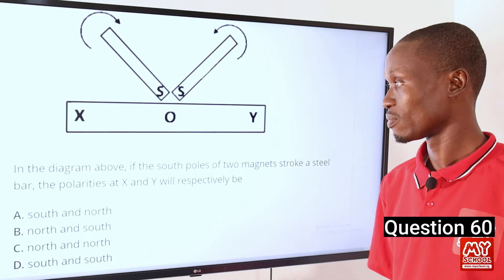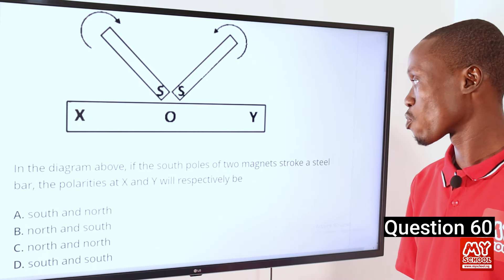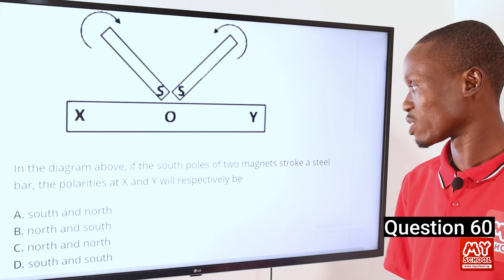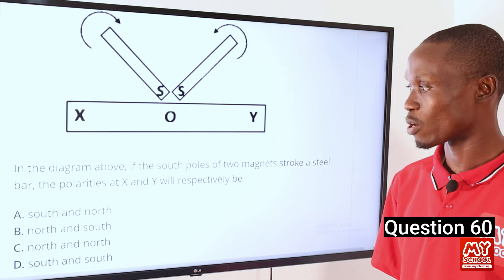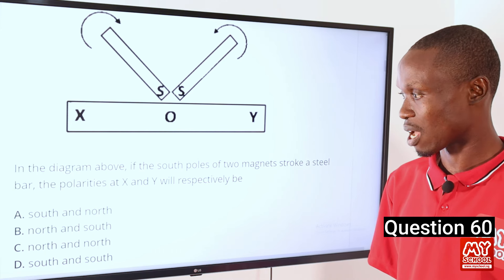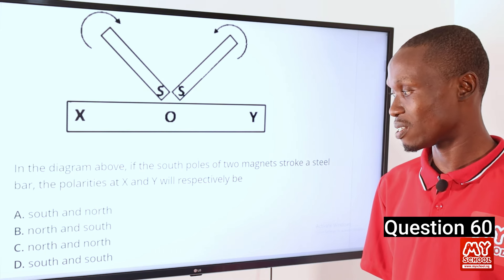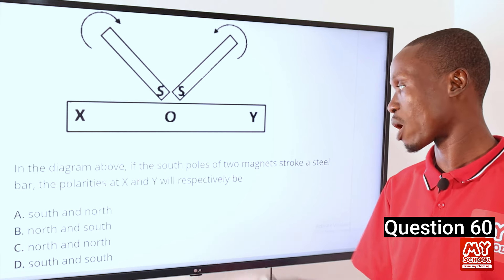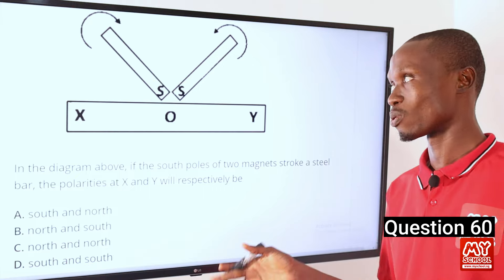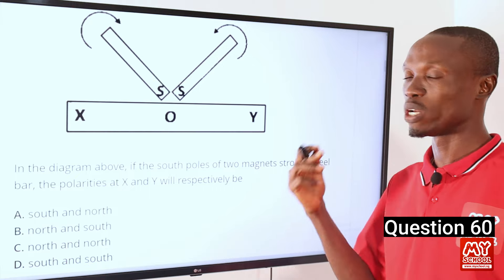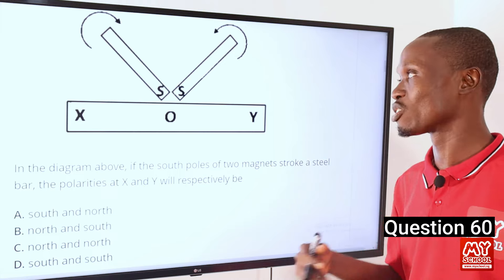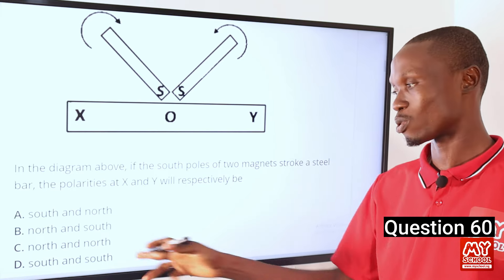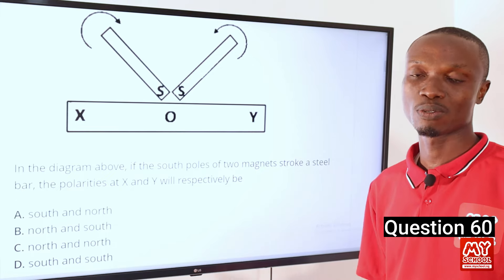Question 60. In the diagram above, if the south poles of two magnets stroke a steel bar, the polarities at X and Y will respectively be: A, south and north; B, north and south; C, north and north; D, south and south. Since you are stroking with the south pole, the opposite polarity will be induced at both contact points. So both points will be north, making option C — north and north — the correct option.